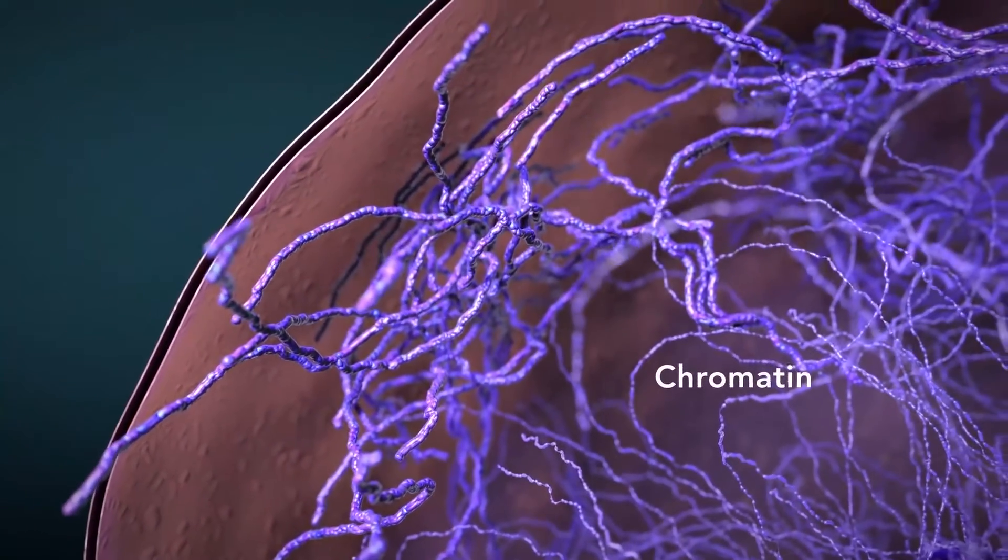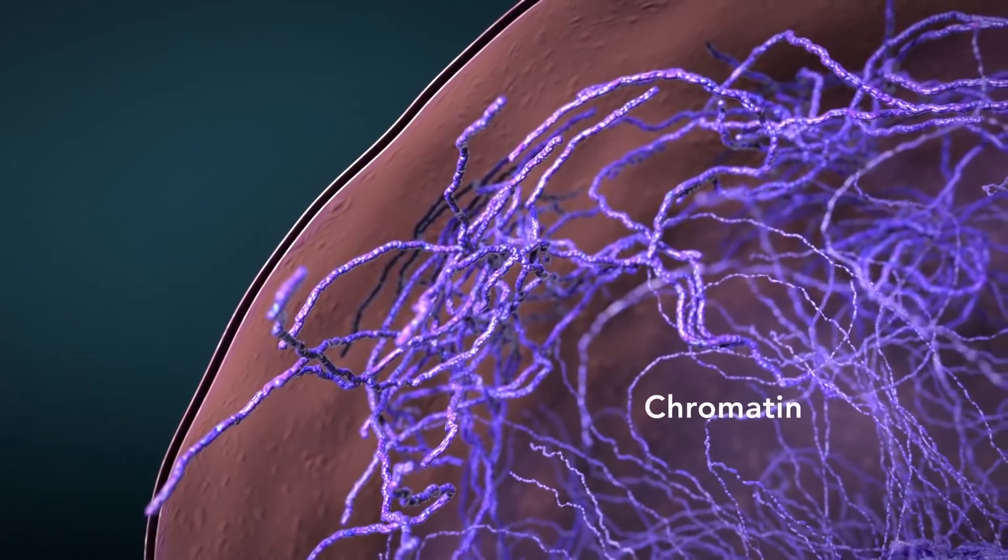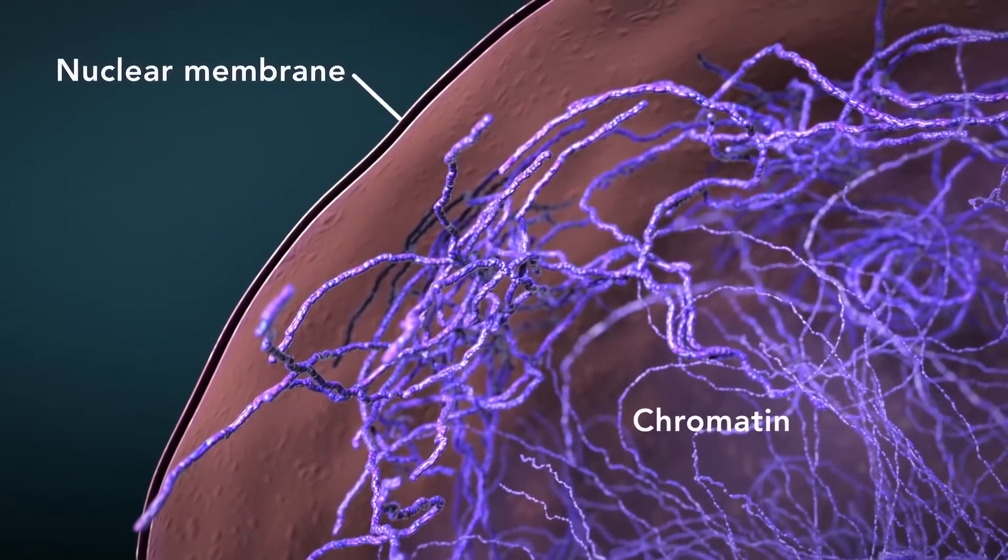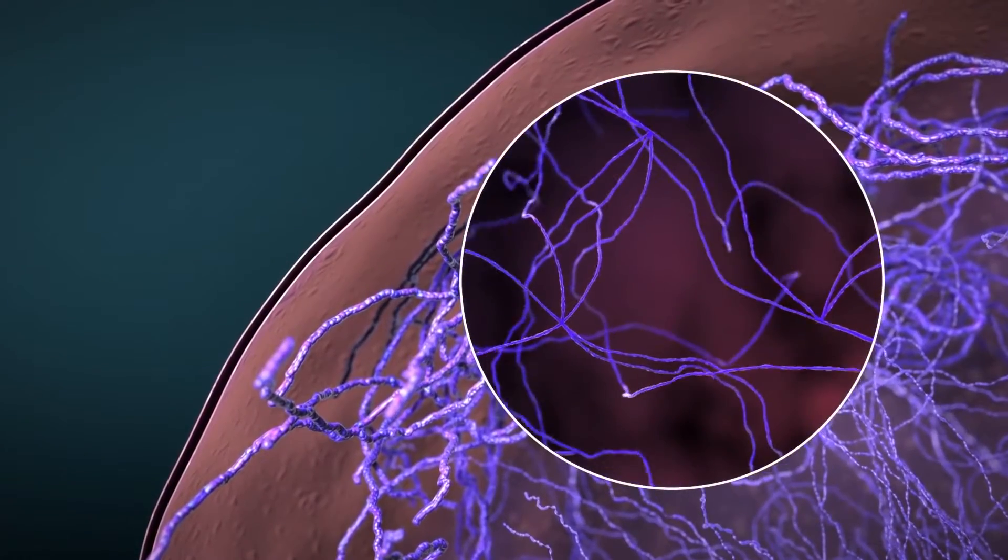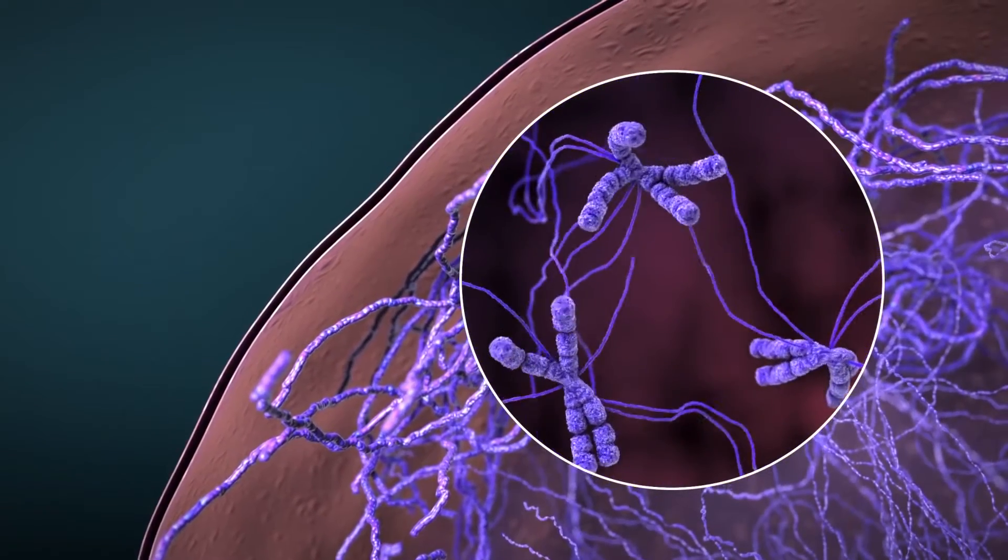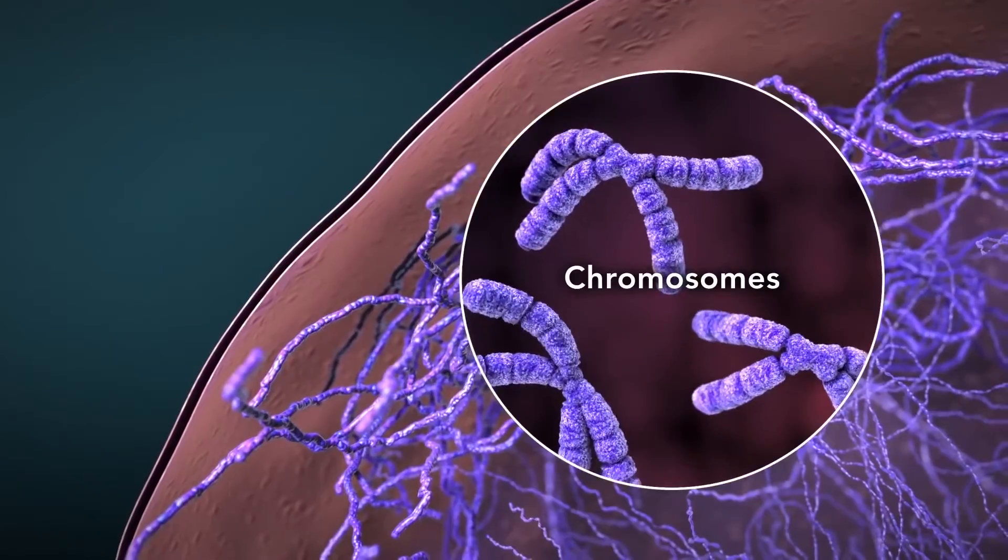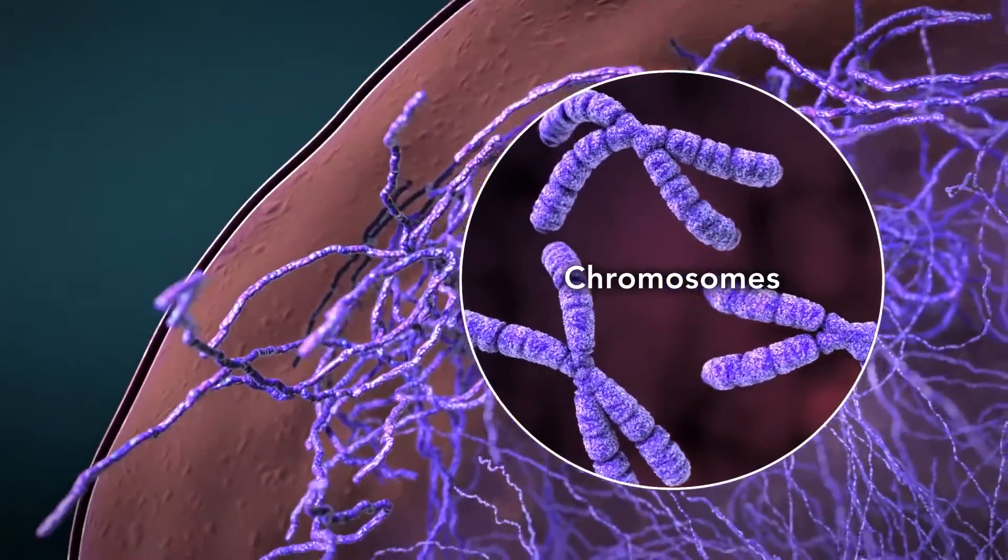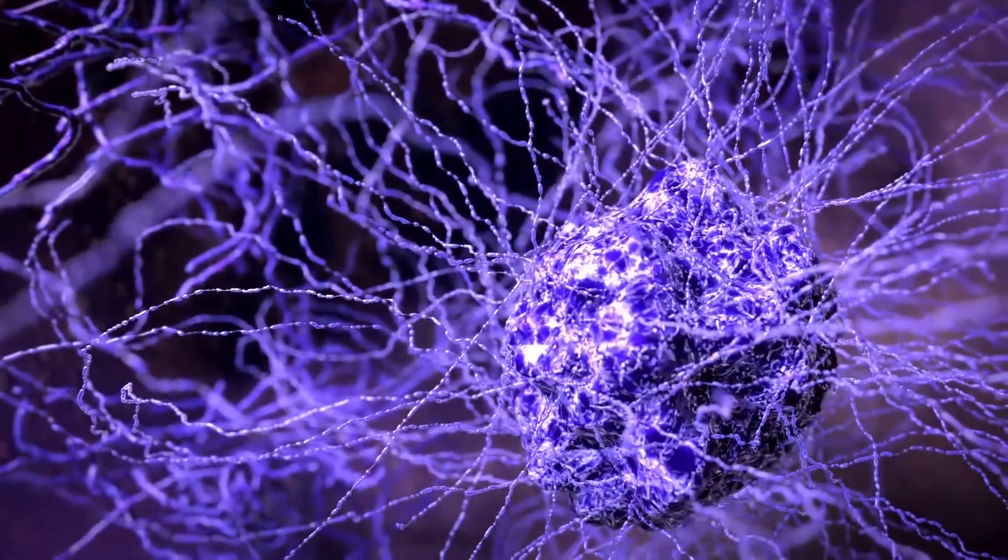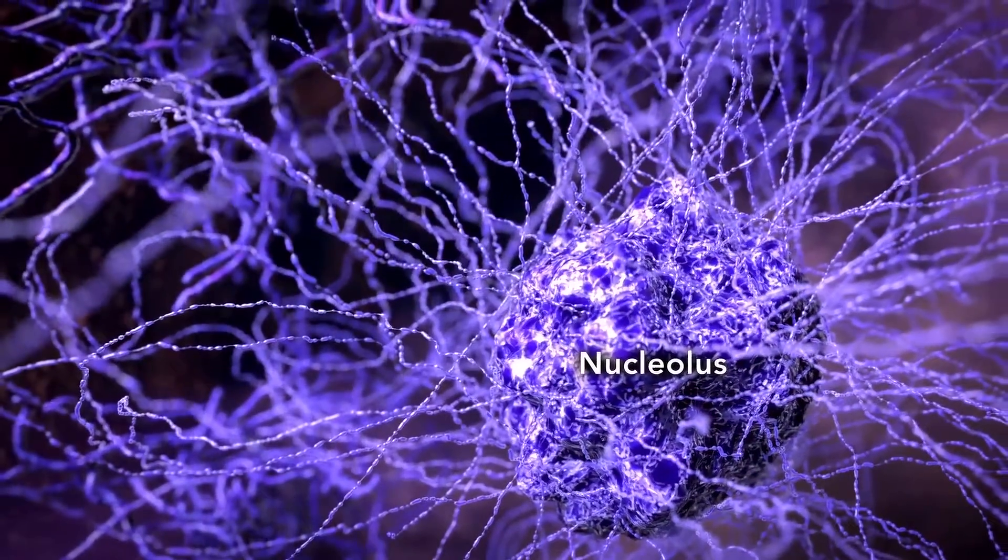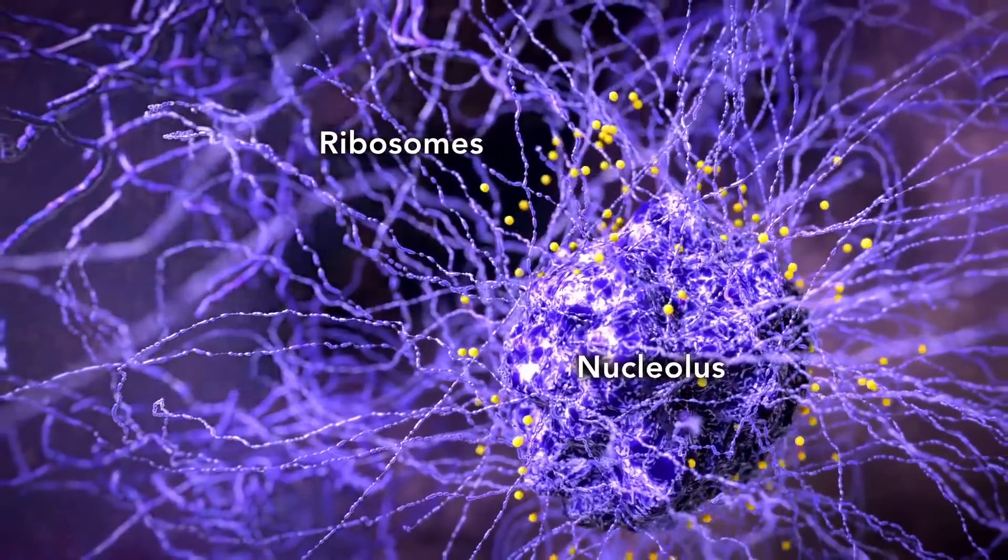Chromatin is the tangled spread out form of DNA found inside the nuclear membrane. When a cell is ready to divide, DNA condenses into structures known as chromosomes. The nucleus also contains a nucleolus which is a structure where ribosomes are made.